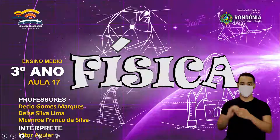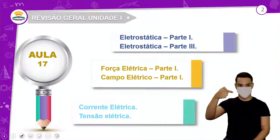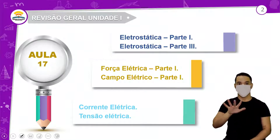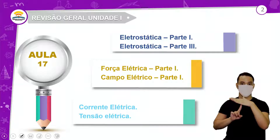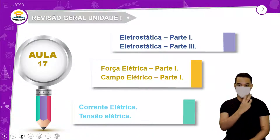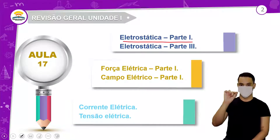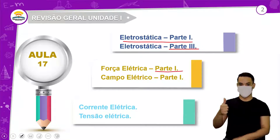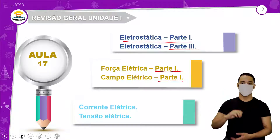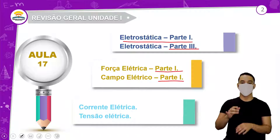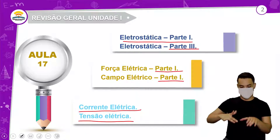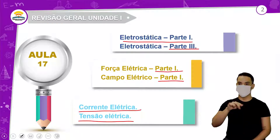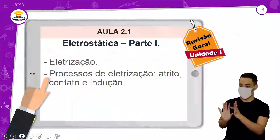Revisão, aula 17. Revisão geral da unidade 1, física do terceiro ano. Aqui nós vamos ter eletrostática parte 1 e parte 3, força elétrica parte 1 e campo elétrico parte 1, corrente elétrica e tensão elétrica. São conteúdos bem ligados, um já vai puxando o outro.